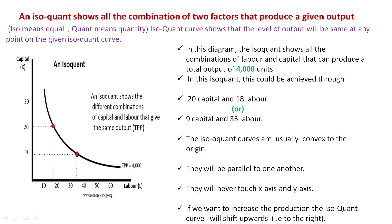Here is a graphical representation of iso-quant curves showing change in two variables — capital and labor. ISO means equal, quant means quantity. Iso-quant curves show the level of output at every point on the given iso-quant curve. In this diagram, the iso-quant curves show all the combinations of labor and capital that can produce a total output of 4,000 units. This output should be achieved through various combinations — a few figures are referred to here for our understanding.